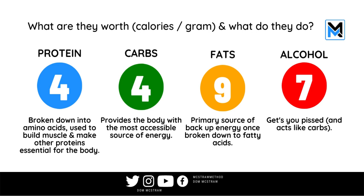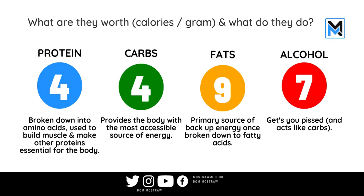We've got some quick fast-acting carbohydrates and more complex carbohydrates that take longer to digest — and these are in line with some of the problems of the modern diet. Fats come in higher at nine calories per gram; they are the primary source of backup energy once broken down into fatty acids your body can use. And whilst it's not one of the three, alcohol is one we tend to overlook — it comes in at seven calories per gram and acts like carbohydrates when in the body.